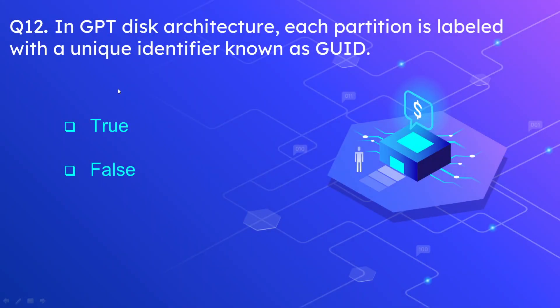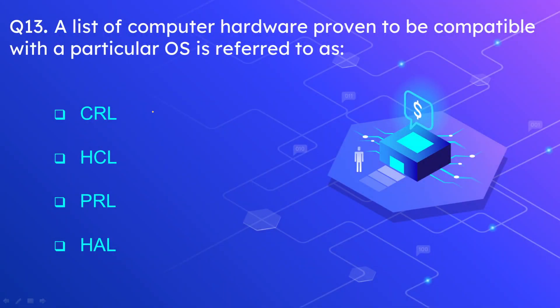Question number 12: In GPT disk architecture, each partition is labeled with a unique identifier known as GUID. We have two options — whether this statement is true or false. The correct option is true, yes this statement is true. Question number 13 is that a list of computer hardware proven to be compatible with a particular OS is referred to as what?